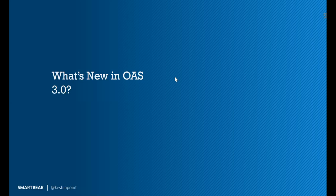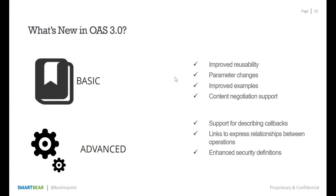OpenAPI is currently at version 3.0, and it brings some unique capabilities. I've segmented what's new into two categories: basic and advanced features. Basic features include improved usability, changes to parameters and examples, and content negotiation support. Advanced features include enhanced security definitions with more use cases, and callbacks and links, which have been very well received by the community. In this webinar, we'll focus more on the basic functionalities.